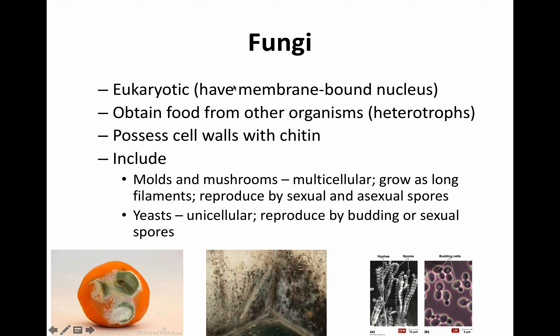Fungi include yeast and molds. They are eukaryotic heterotrophs that obtain food from other organisms. They possess chitin in their cell walls. Molds and mushrooms are multicellular and filamentous, reproducing by sexual or asexual spores. Yeast are unicellular and reproduce by budding — an immature yeast cell pinches off from the mature yeast cell.